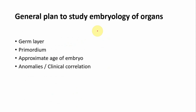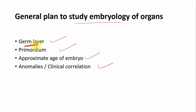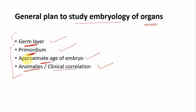Before beginning with the embryology of the organs, you should have a general plan. For any organ, if asked as a short note or exam question, you should mention at least these four points: the germ layer of origin, the primordial embryological structure giving rise to that organ, the approximate age of the embryo during which the organ is developing, and lastly the anomalies or clinical correlations.